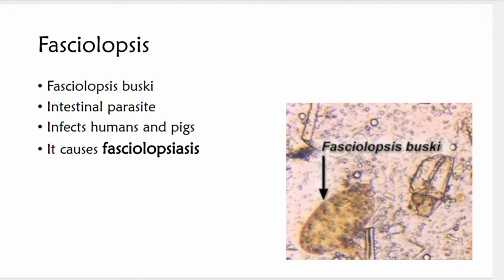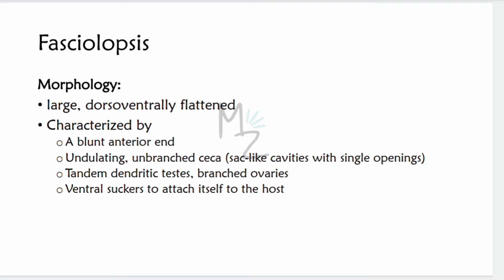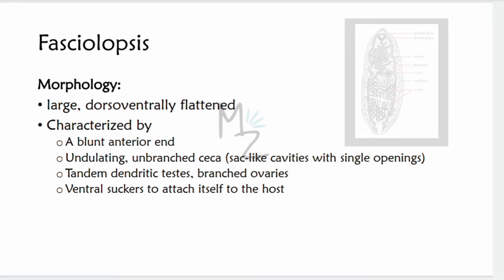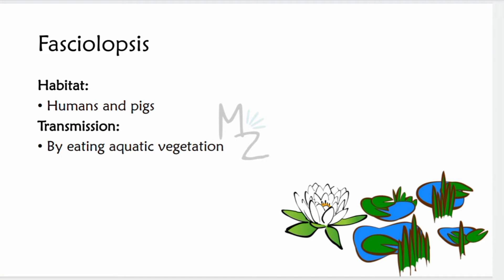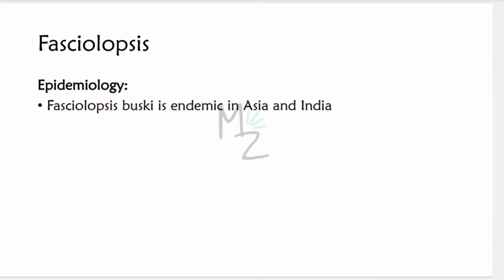The next trematode is Fasciolopsis buski, an intestinal parasite of humans and pigs, responsible for causing fasciolopsiasis. Morphology: it is large, dorsoventrally flattened, characterized by a blunt anterior end, undulating unbranched caeca (sac-like cavities with single openings), tandem dendritic testes, branched ovaries, and ventral suckers to attach to the host. Habitat: humans and pigs. Transmission occurs by eating aquatic vegetation. Epidemiology: Fasciolopsis buski is endemic to Asia and India.